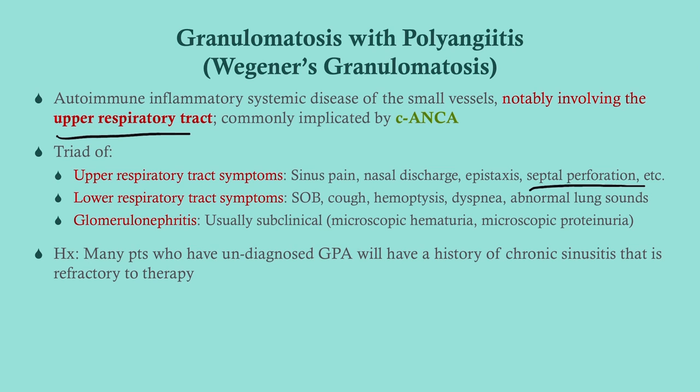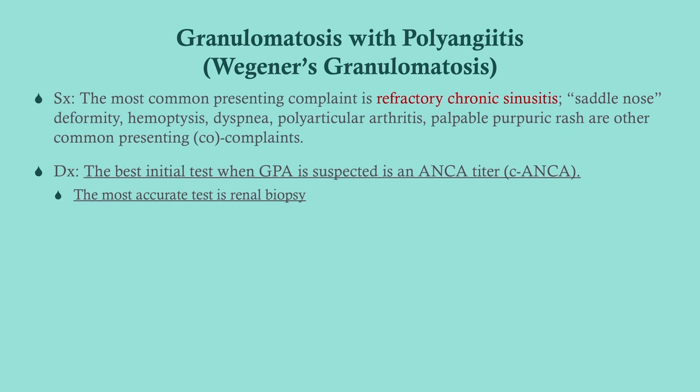Wegener's commonly involves the kidneys with glomerulonephritis, but this is usually subclinical — the patient won't have symptoms of renal failure, but a urinalysis may show abnormalities. Most patients with undiagnosed Wegener's have a history of chronic sinusitis, sometimes having already seen an ENT without resolution. Stress the combination of respiratory symptoms plus subclinical glomerulonephritis. The most common presenting complaint is refractory chronic sinusitis.